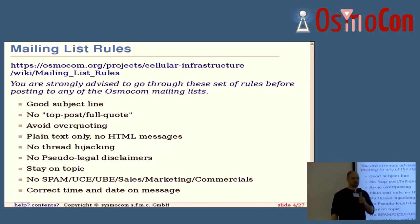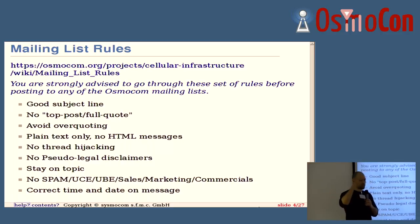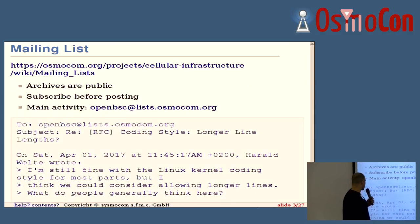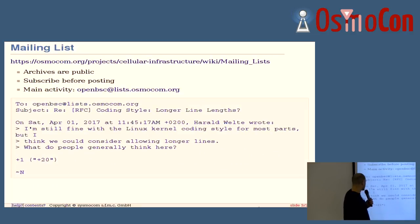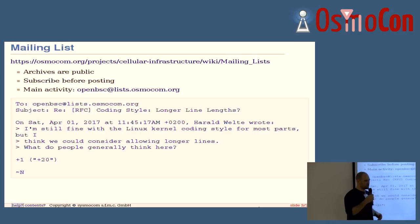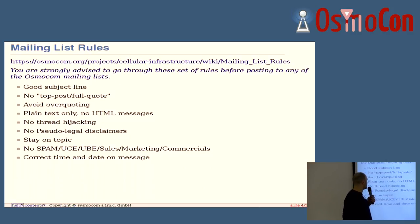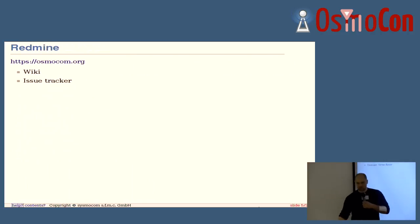Don't say something like 'This mail shall not be read by people not liable to our company rules' — no pseudo-legal disclaimers. Stay on topic of the mailing list, don't spam, and have a correct time so that our mail logs work out and we don't get your mail always at the bottom or pushed far into the future. That's pretty basic. A typical mail has a clear subject line, sent to OpenBSC. We now decided on 120 characters of code width being permissible.